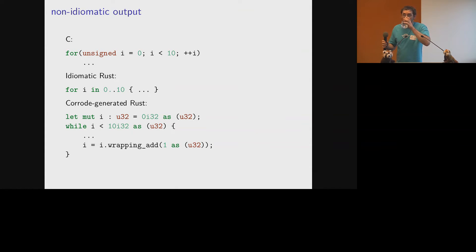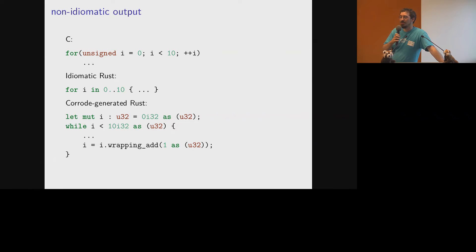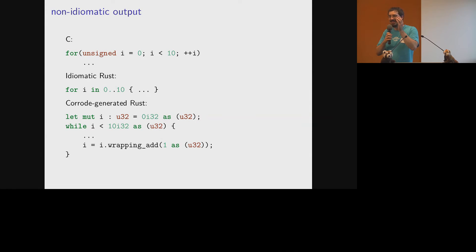Q: Are you using an existing C front end or rolling your own? One thing I haven't mentioned yet is how I've implemented Corrode. It's a C-to-Rust translator, so there are already two programming languages involved - naturally I decided to add a third. The implementation is written in Haskell. The reason is that I tried at first to write Corrode in Rust, and the only half-reasonable C front end I could find was the Rust bindings to libclang.